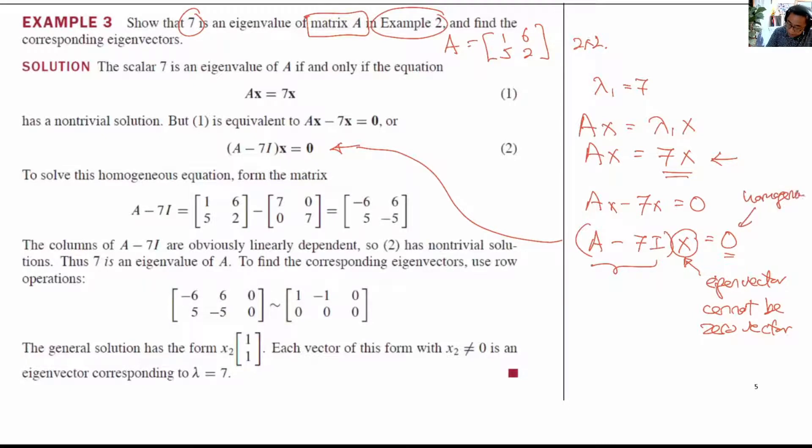Because the right-hand side of this equation is the 0 vector. So we say to solve this homogeneous equation, let's work on this matrix A minus 7I. So we have A minus 7I here, we have A here, we have 7I here.